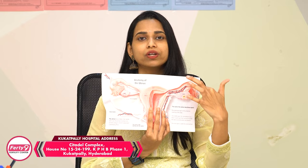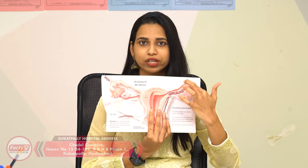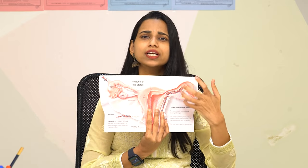In each ovary, there are about 6 follicles. A follicle is essentially an egg bag — a sac that contains the egg.